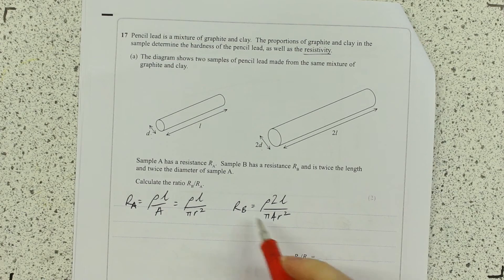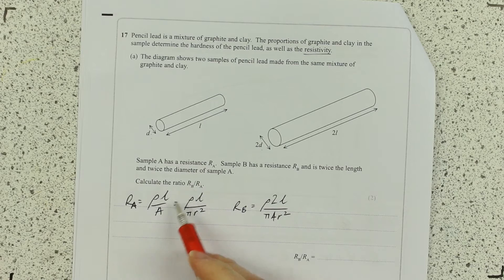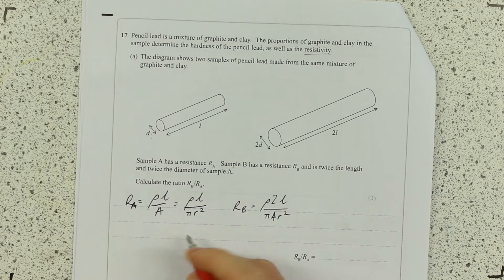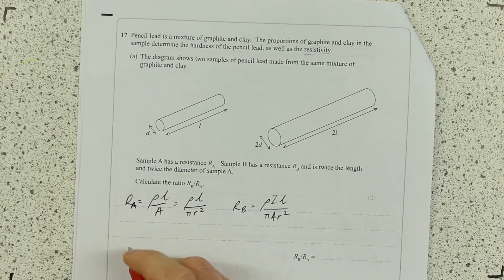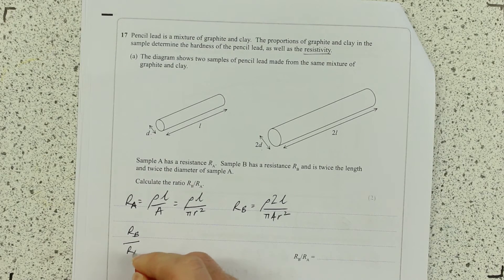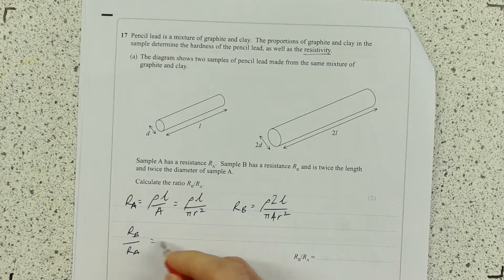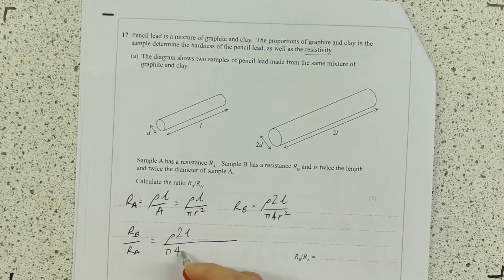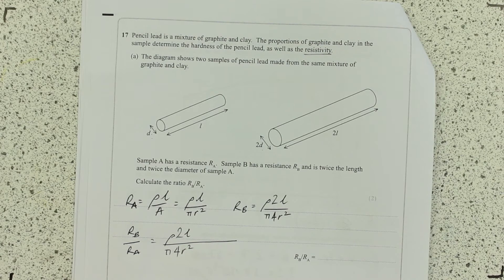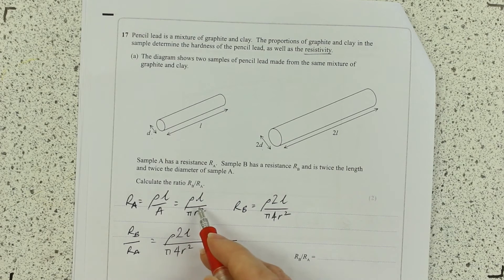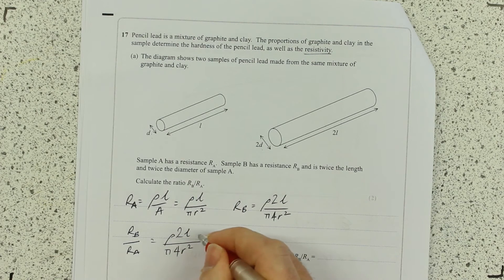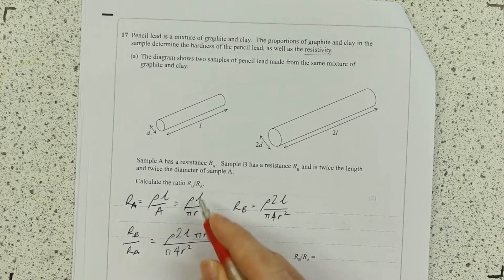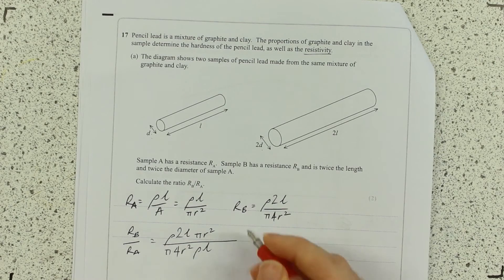So now I can equate the two or I can use the ratio RB to RA. So put that over that. And you'll start to see that some things cancel. So RB is ρ 2L over 4π R squared, and RA is all of this, which I'm going to put in inversely as it's on the bottom line of my ratio there.